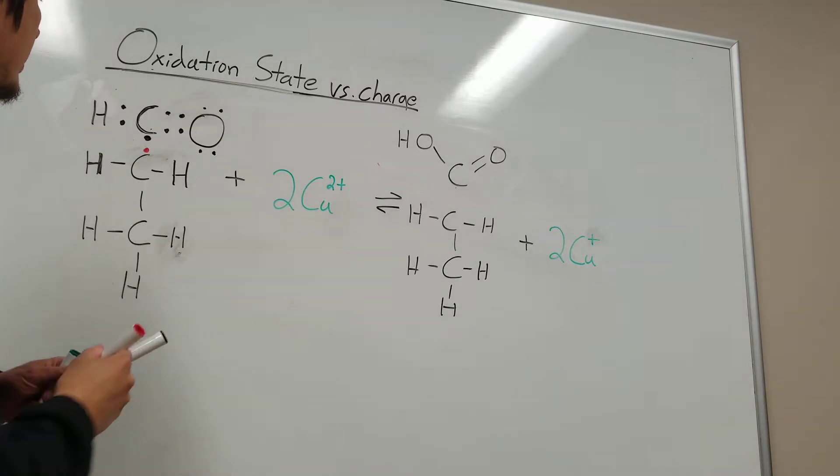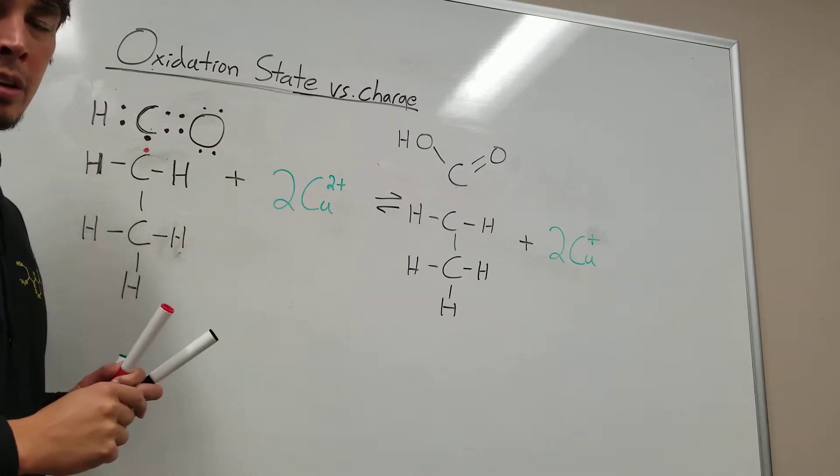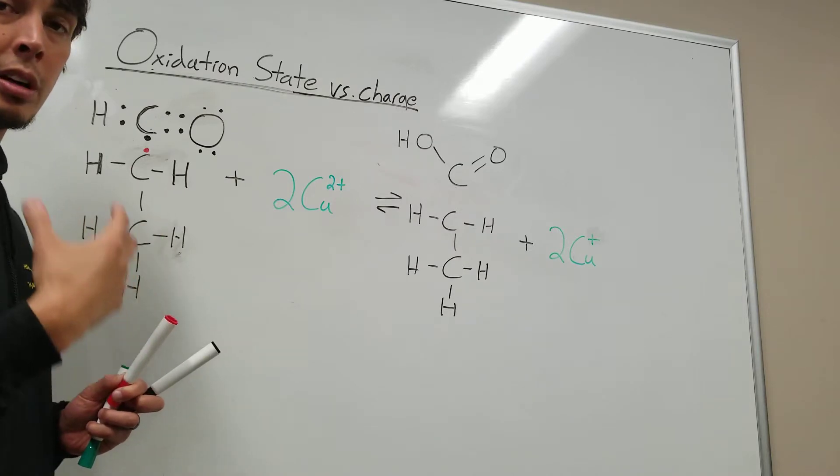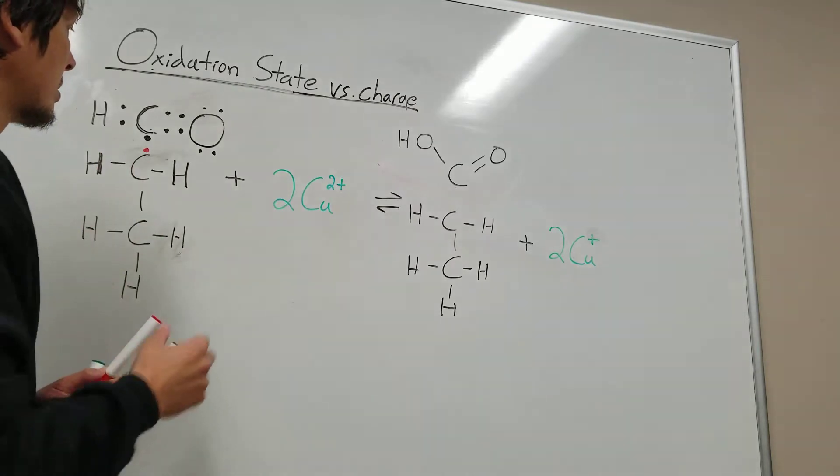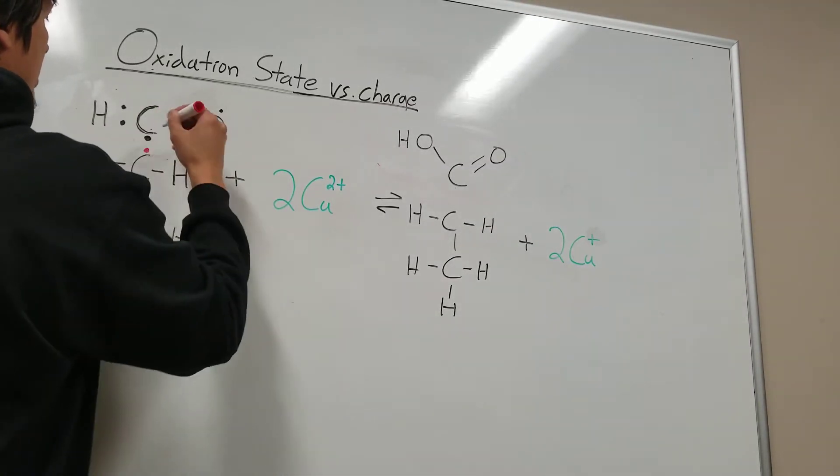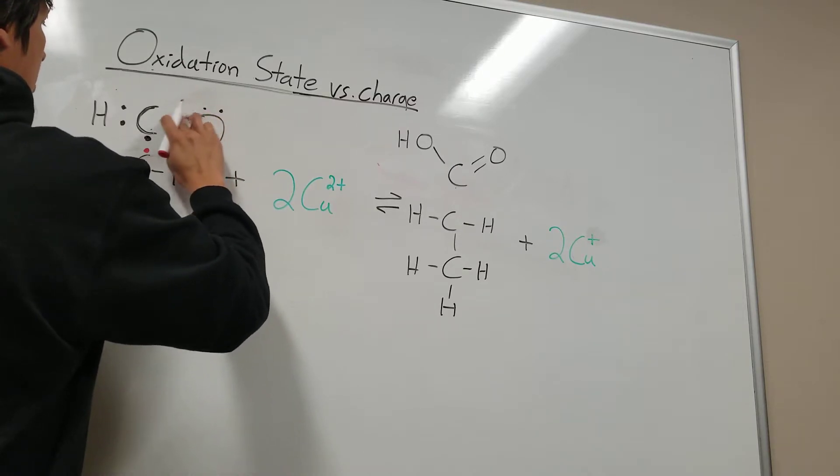Finally, we look between the carbon and the oxygen. Which one's more electronegative between carbon and oxygen? Oxygen is more electronegative, so we're going to assign all of these four electrons to the oxygen.